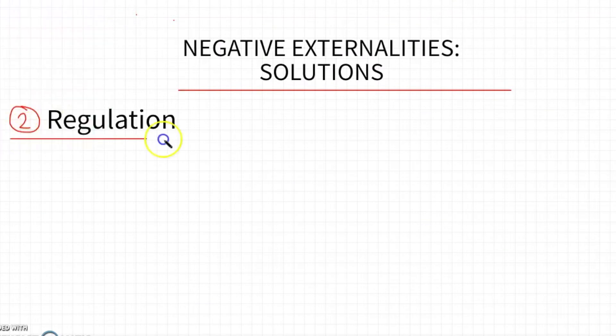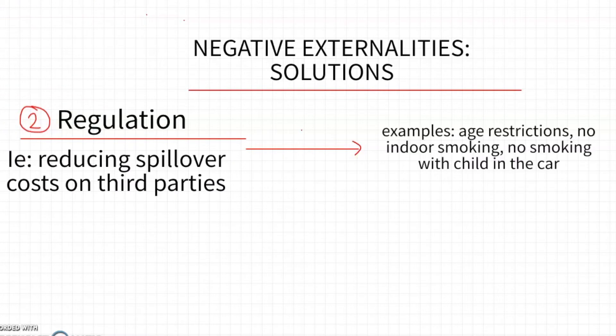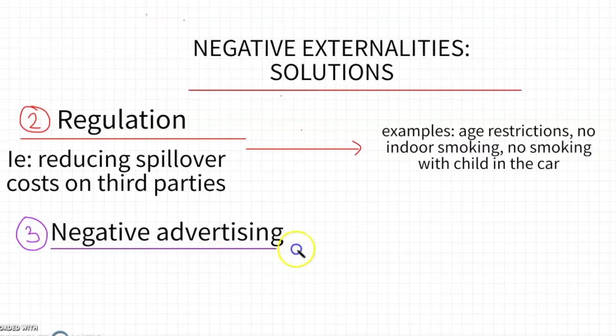Another option is to use regulation. Regulation is a not market based policy. In other words, you're not really trying to increase the price of the product, but you're setting rules, you're setting legislation. And the goal is to reduce spillover costs on third parties. So you might not reduce consumption, but you're trying to protect groups that suffer from secondhand smoke, for example. Some examples would be age restrictions. Minimum age restrictions would reduce the number of consumers in the market and therefore decrease demand for alcohol or cigarettes. No indoor smoking is implemented in a lot of places to prevent secondhand smoke. In places like Austria, laws have been passed where you cannot smoke with a child in the car so that if you choose to smoke, you cannot increase costs for third parties.